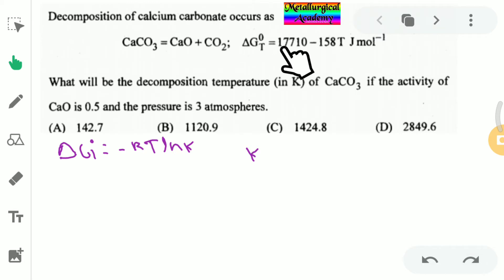Here delta G0 was given. We need to find out K value. K means activity of products by activity of reactants. Activity of gases will be taken as a partial pressure of gas.